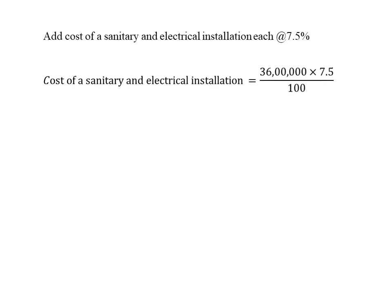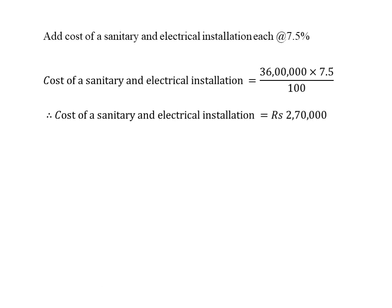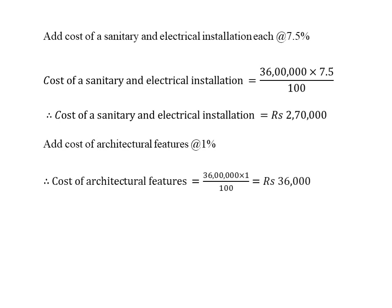Cost of electrical installation is equal to 36 lakhs into 7.5 divided by 100, which equals 2,70,000. Next, cost of architectural features at 1%, so cost of architectural features is equal to 36 lakhs into 1 divided by 100, which equals 36,000.